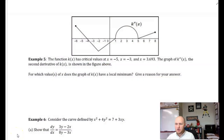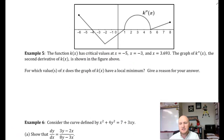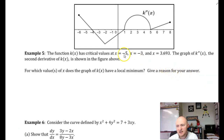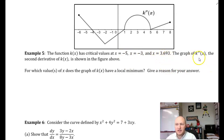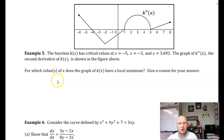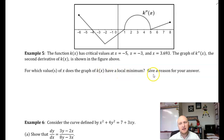Let's jump in and look at example number five. The function k of x has critical values at x equals negative 5, x equals negative 3, and x equals 3.693. The graph of k double prime of x, the second derivative of k of x, is shown in the figure above.